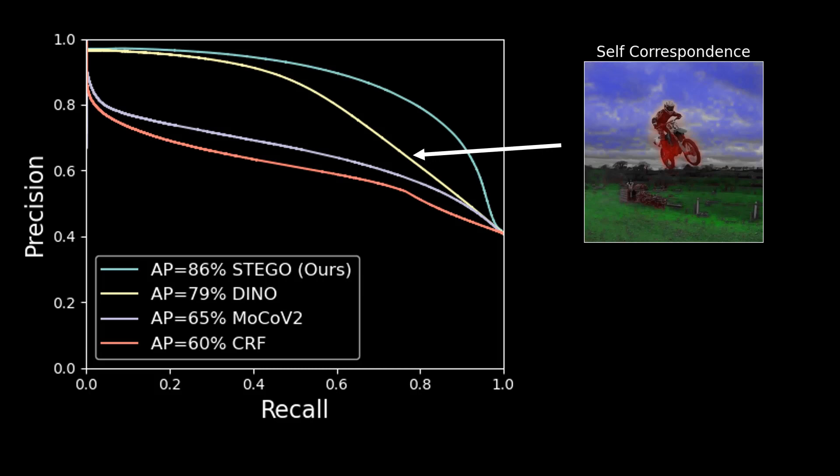In other words, though we don't have access to labels, we do have access to a great proxy for the ground truth label co-occurrence, namely the feature correspondences. This forms the key supervisory signal in our algorithm, Stego.